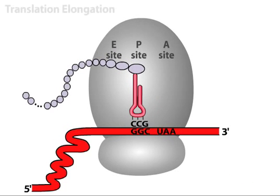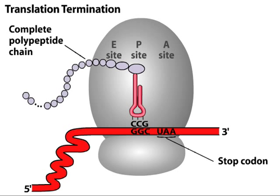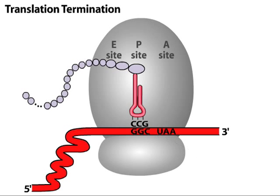The third and final stage of translation called termination is triggered by a stop codon in the mRNA. Stop codons are recognized by release factors, which help release the fully synthesized polypeptide chain from the ribosome.